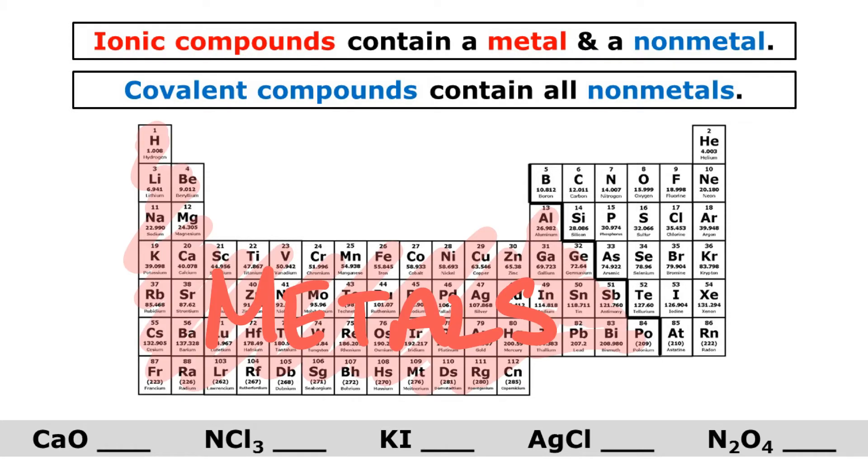Remember that metals are on the left side of the dark jagged line and non-metals are on the right side of the dark jagged line. So ionic compounds have at least one element from both sides of the dark jagged line, a metal and a non-metal.